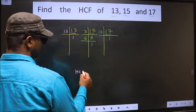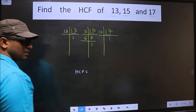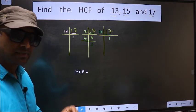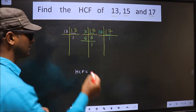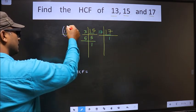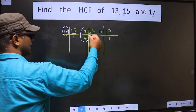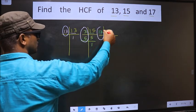Now our HCF is... HCF is the product of numbers which should be present over here and here and also here.